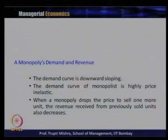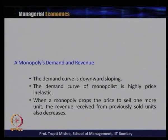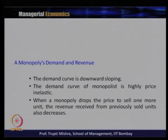Now we will talk about the demand and revenue of a monopoly market. The demand curve is downward sloping — a regular demand curve where price and quantity demanded are inversely related. If the monopolist wants to sell more, they have to reduce the price.